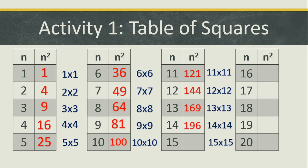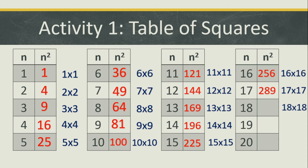15 times 15, the answer is 225. How about 16 times 16? The answer is 256. 17 times 17, the answer is 289. 18 times 18, the answer is 324. 19 times 19, the answer is 361. And lastly, 20 times 20, the answer is 400.